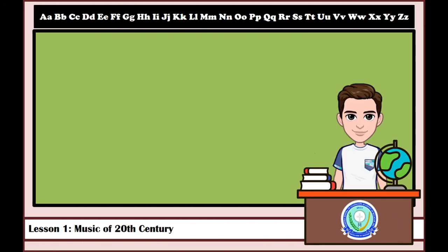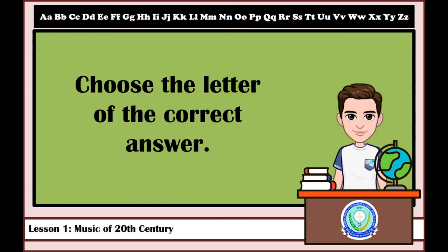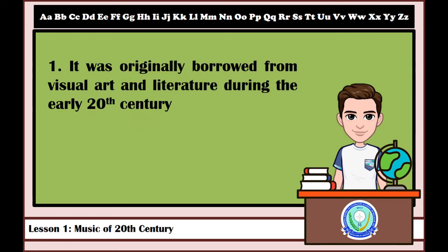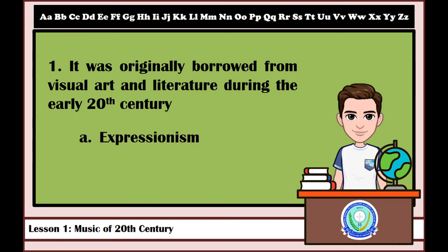To deepen and enrich your understanding about 20th century music, let us proceed to our activity. Choose the correct letter of your answer. Number 1: It was originally borrowed from visual art and literature during the early 20th century. A. Expressionism. B. Impressionism. The correct answer is Expressionism, Letter A.